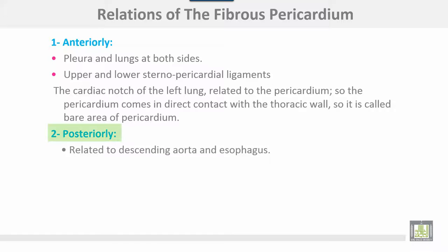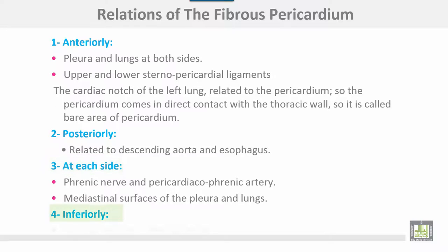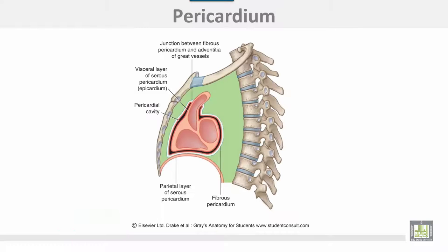Posteriorly, the fibrous pericardium is related to the descending aorta and the esophagus. At each side are the phrenic nerves and pericardiacophrenic arteries, and the mediastinal surface of the pleura and lungs. Inferiorly, it is related to the central tendon of the diaphragm.